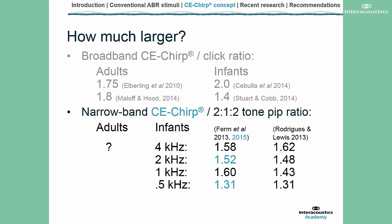With my colleagues Guy Lightfoot and John Stevens, I completed a similar study to compare narrowband CE chirps and tone pips or tone bursts, and we did this testing in infants. We found that the narrowband chirp amplitude at 4kHz, 2kHz, and 1kHz is at least 1.5 times the size of that with the tone pip. At 500 Hz, the difference wasn't quite so great, but it was about 1.3. Rodriguez and Lewis have actually produced similar results.